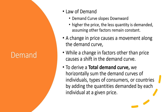The Law of Demand states that the demand curve slopes downward, meaning that the higher the price, the less quantity is demanded, assuming other factors remain constant. A change in price causes a movement along the demand curve, while a change in factors other than price causes a shift in the demand curve.